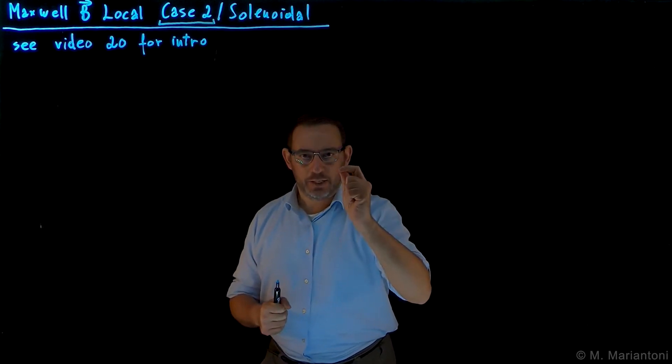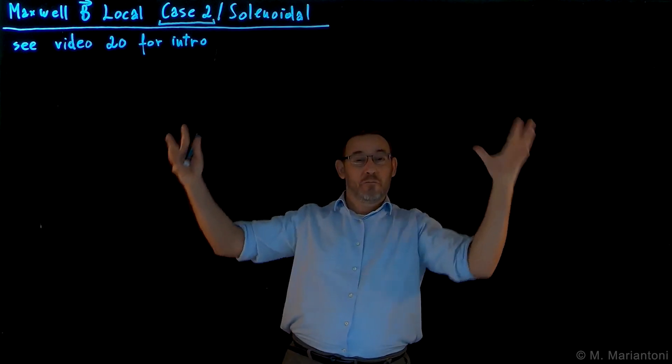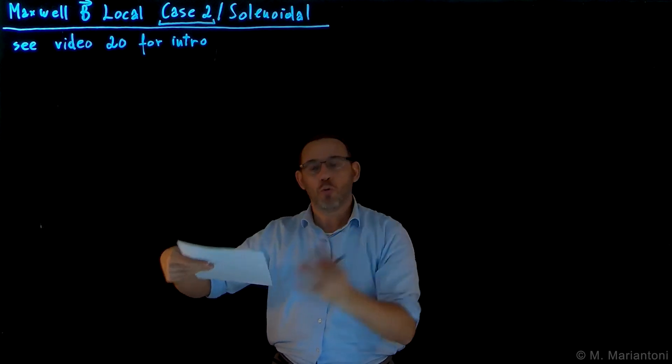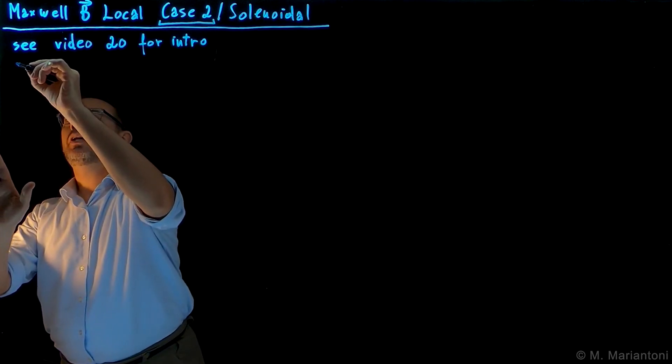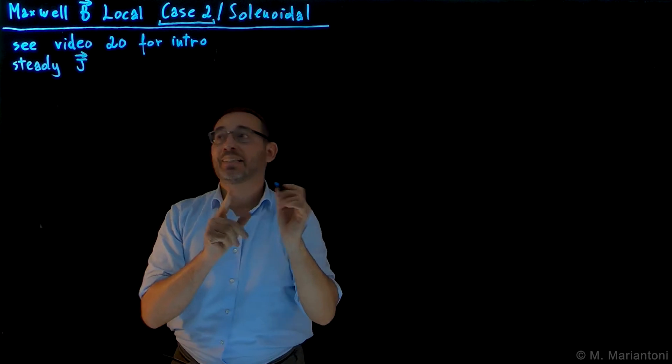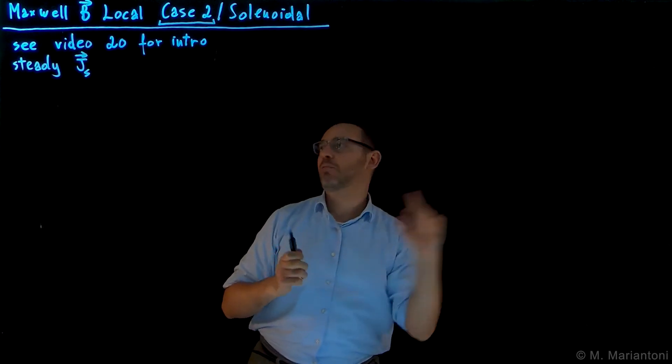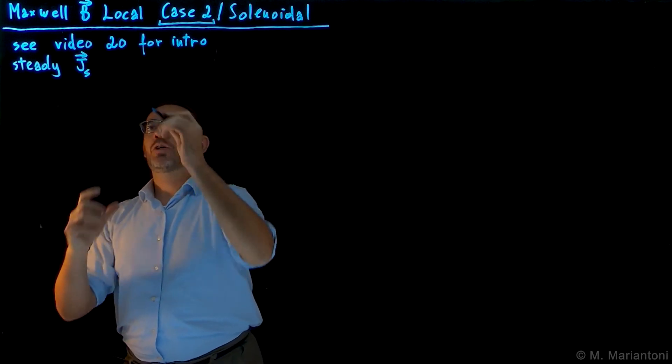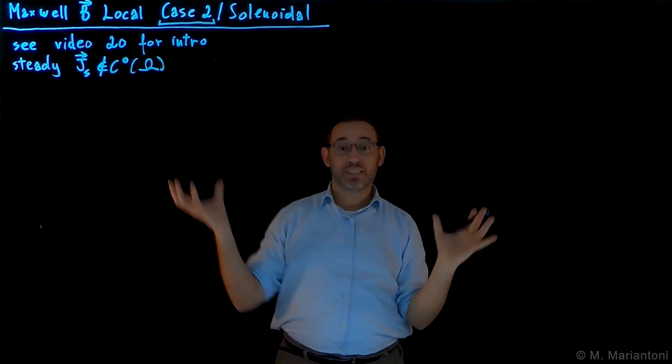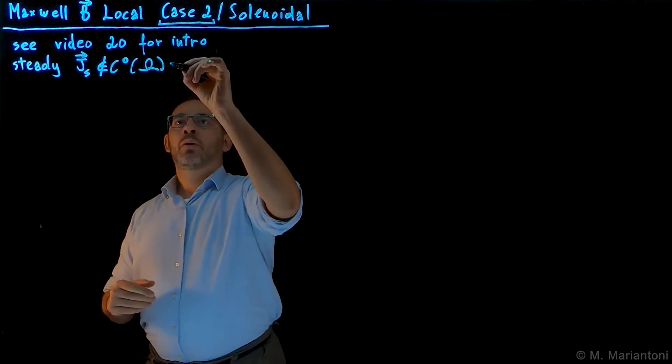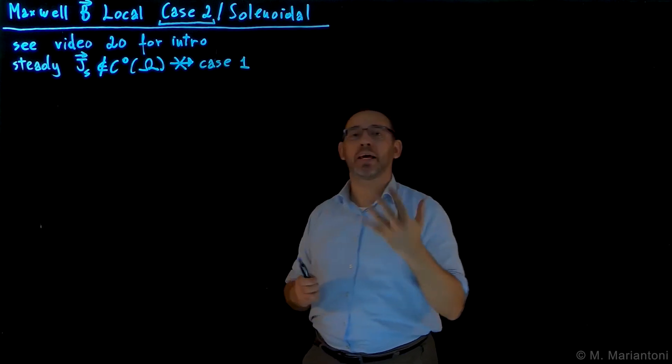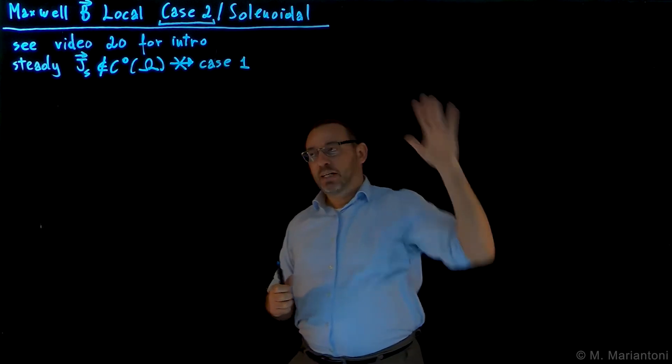As always, we consider a steady current, that is a DC current, but this time, instead of considering a DC current distributed in a volume of space, this current is only distributed on a sheet, like just on this sheet of paper, it's only on this paper, nowhere else in 3D. We have a steady current with a vector density J underscore S, where S is for surface, because now it only lives on a surface. This J_S is a discontinuous function, is not C naught in general, in capital omega, which is the entire three-dimensional Euclidean space. Since it's not continuous, we cannot use case 1, which is the differential form. Curl, divergent, et cetera, not well defined in this region.